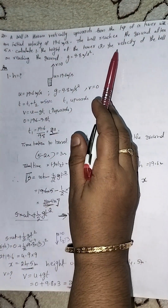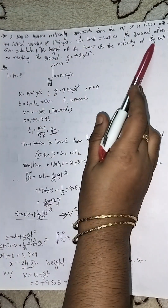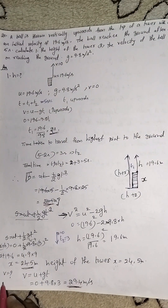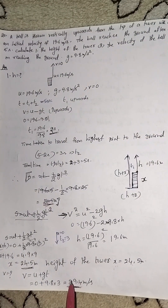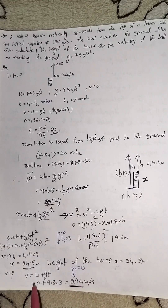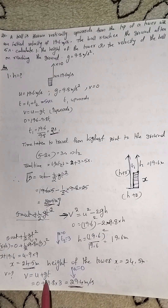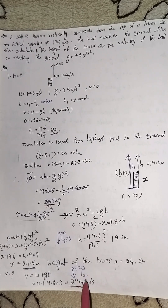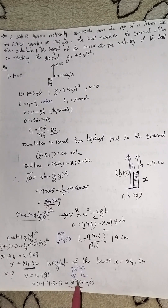Next, we find the velocity of the ball on reaching the ground — the final velocity. Using V = U + gT in the downward direction: U = 0, g = 9.8, T2 = 3 seconds. So the final velocity V equals 29.4 meters per second.